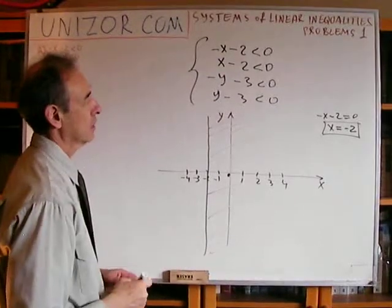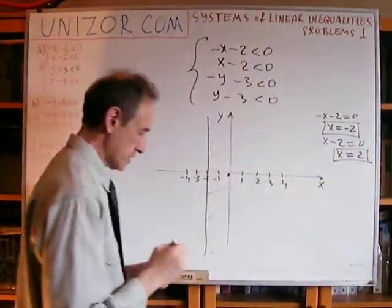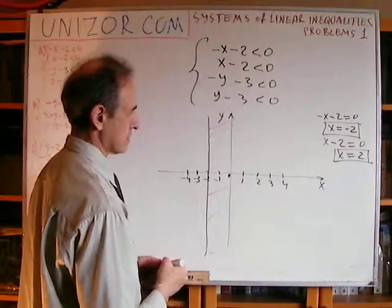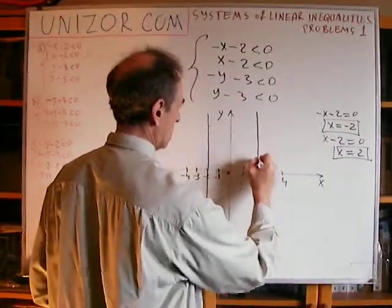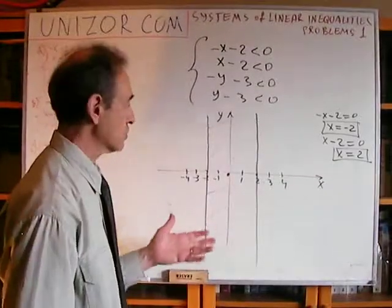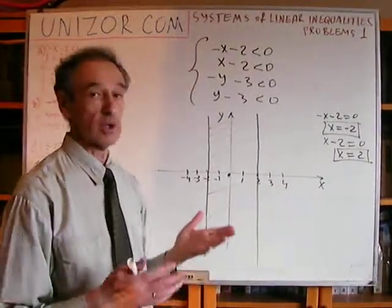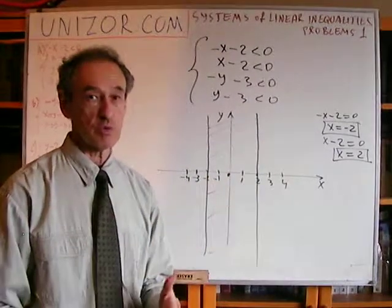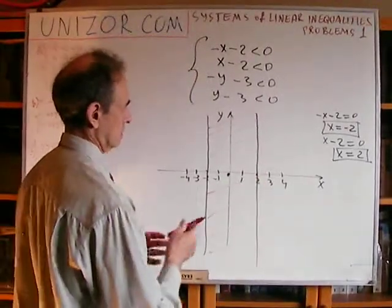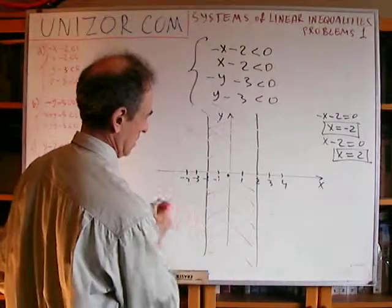Next, x minus 2 equals 0 gives x equals 2. This is a vertical line intersecting the x-axis at x equals 2, with y being any value. Left or right half of the plane? Let's check with x equals 0: we get minus 2 less than 0, which is a true statement. So point (0,0) belongs to the half of the plane we need, which is to the left of x equals 2.